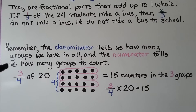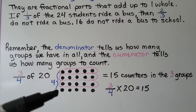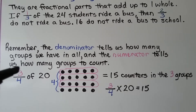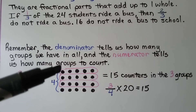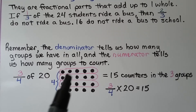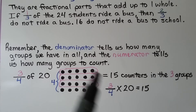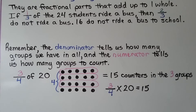Remember, the denominator tells us how many groups we have in all. If we have three-fourths, we have four rows — that's four groups. The numerator tells us how many groups to count — that's how many we circled. We circled three of the four rows. There are fifteen counters in our three circled groups. Three-fourths times twenty is equal to fifteen.